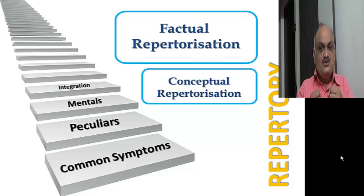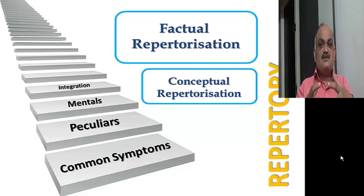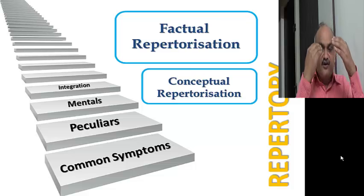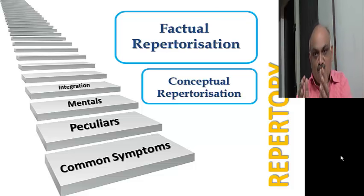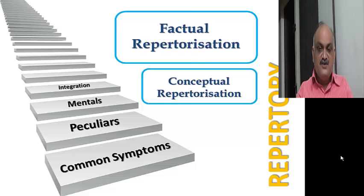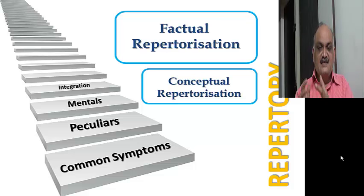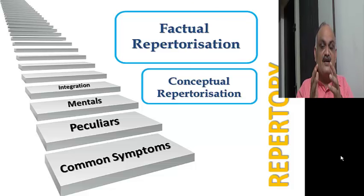You gain trust rapidly when you select 3-4-5 symptoms from a case, find a group of remedies, select one, and it gives good results. This is what you need to achieve at the first level.